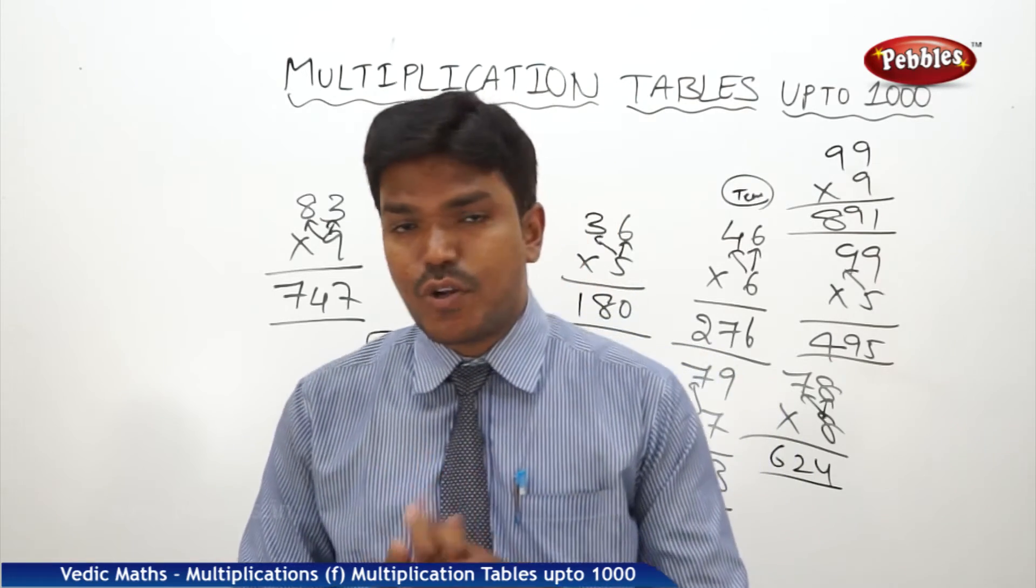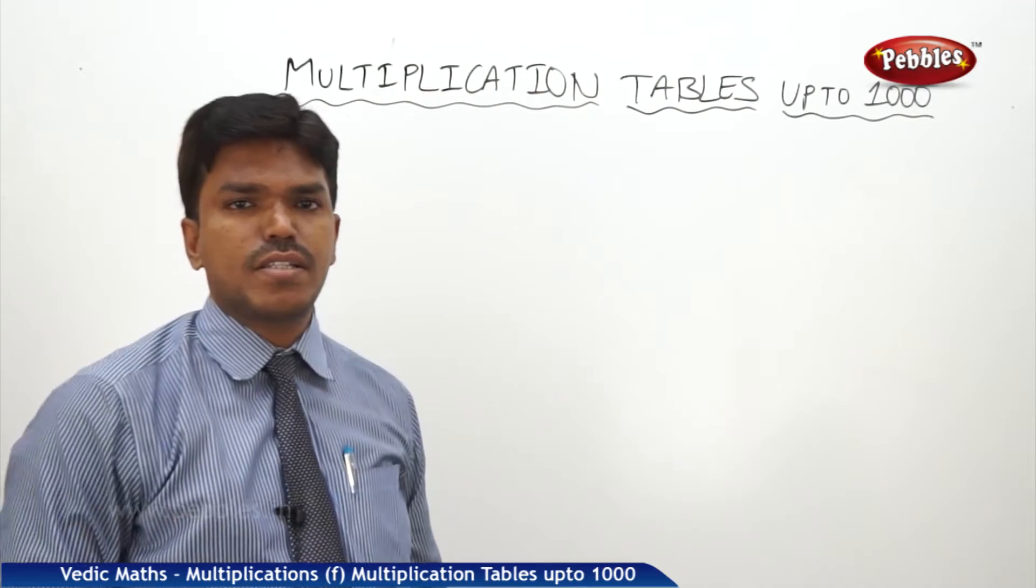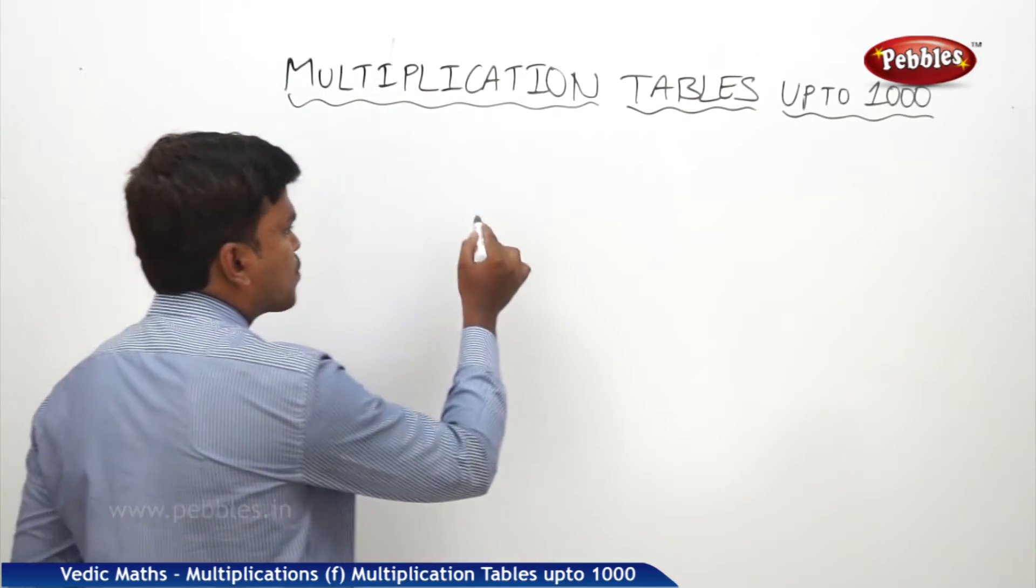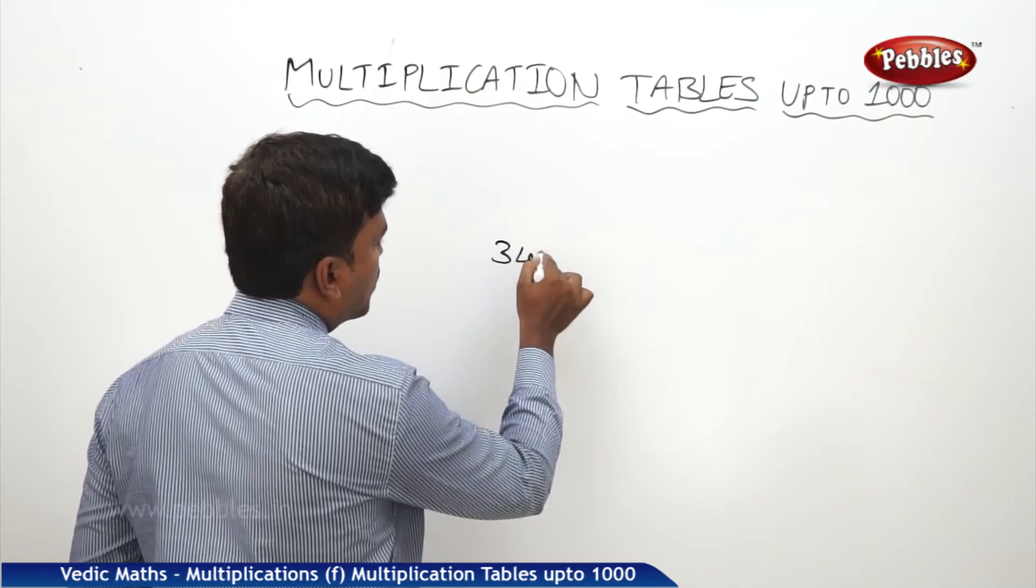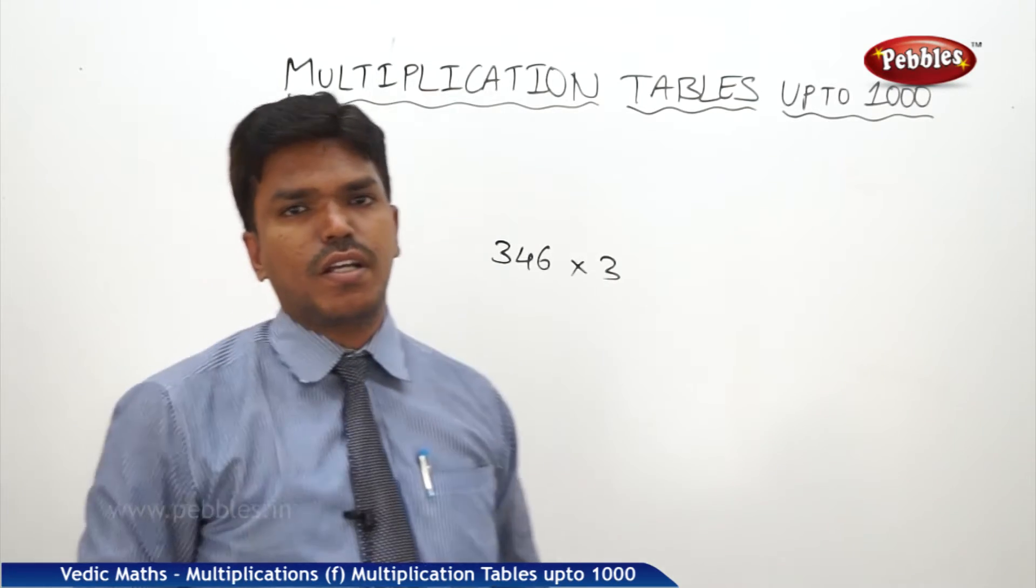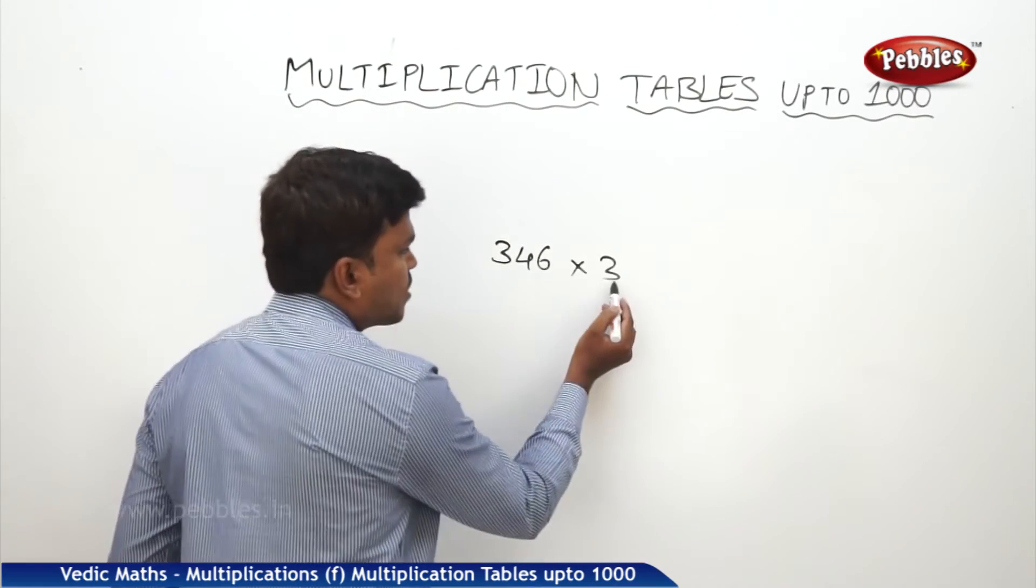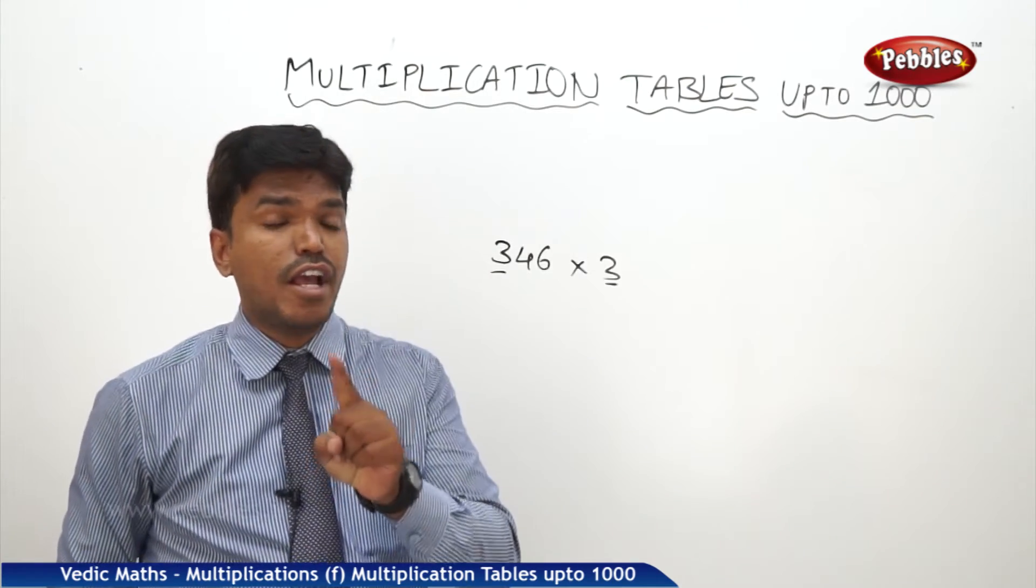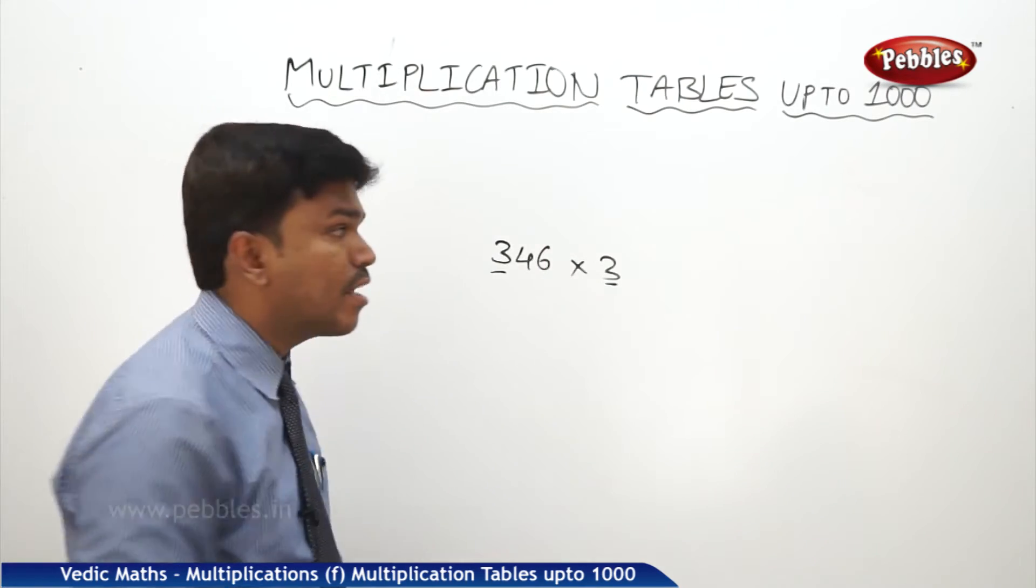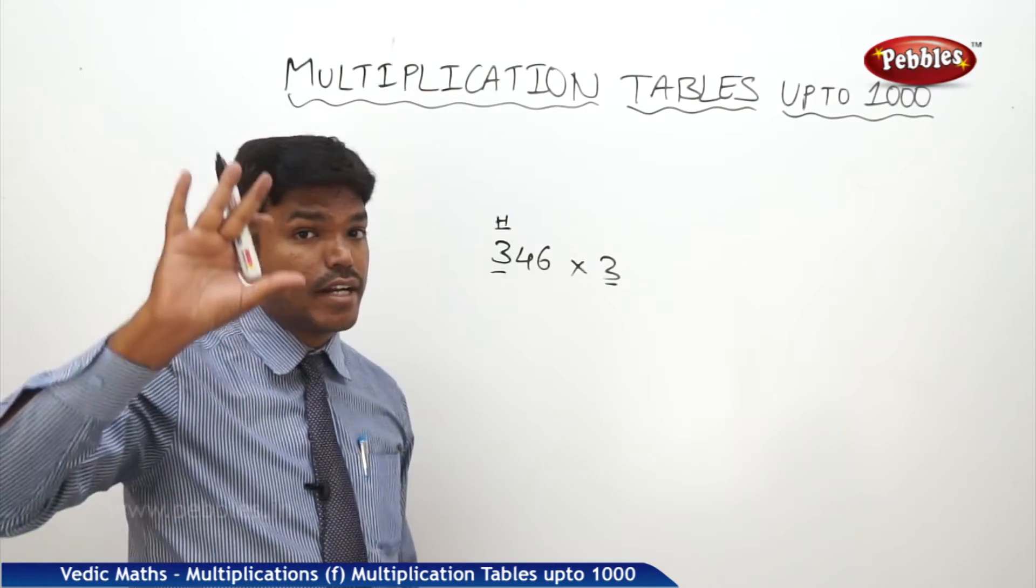But my friend, not only 100 tables, I am going to extend this thing to even 1000 also. Let us extend the same formula, same technique to even up to 1000 tables also. Suppose I want to multiply 346 by 3. You may think it is a little difficult, but actually it is not. What is three threes? Three threes is nine, but take it as 900. Why? This three is in hundreds place. Keep 900 in the mind for some time.